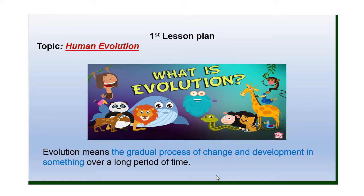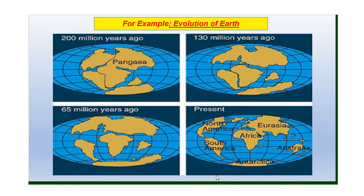For example, the seven continents are a very good example of evolution — evolution of Earth. As we all know, around 200 million years ago, Earth contained a single landmass called Pangea. Later on, this Pangea divided into seven continents due to the forces continuously working inside the Earth.